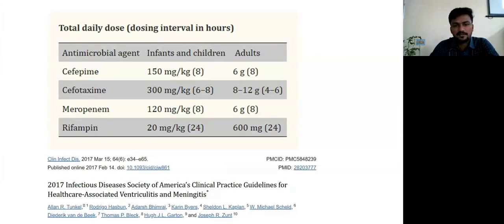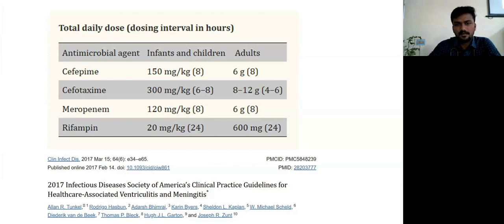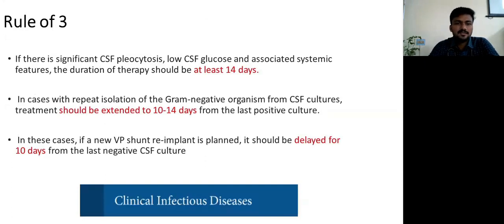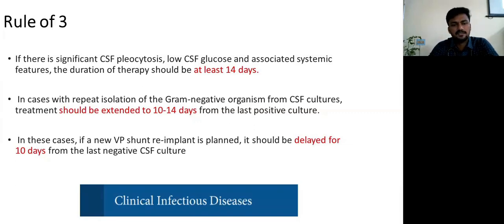Regarding antibiotic dosing: meropenem can be dosed at 120 mg/kg for children, with dosing interval of 8 hours. For adults: 2g IV every 8 hours. Duration of therapy depends on pathogenesis, host factors, and clinical response. Rule of three: if significant CSF pleocytosis with low CSF glucose and systemic features, duration should be at least 14 days. In cases with repeat isolation of Gram-negative organism from CSF, treatment should be extended 10-14 days from the last positive culture — cultures repeated every 72 hours. If a new VP shunt re-implant is planned, it should be delayed at least 10 days from the last negative culture.